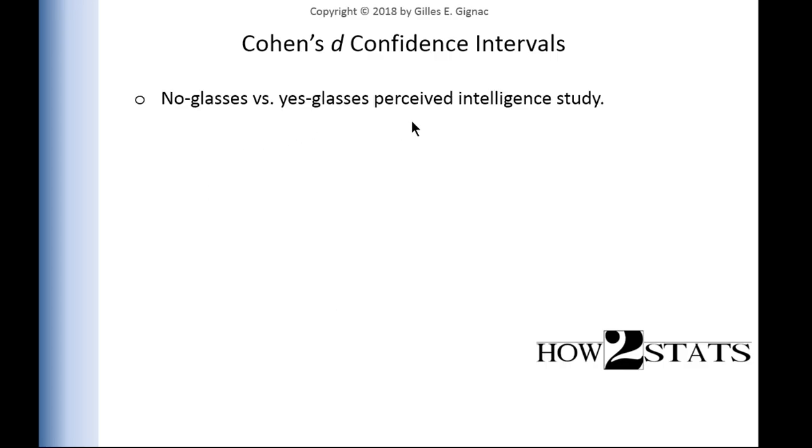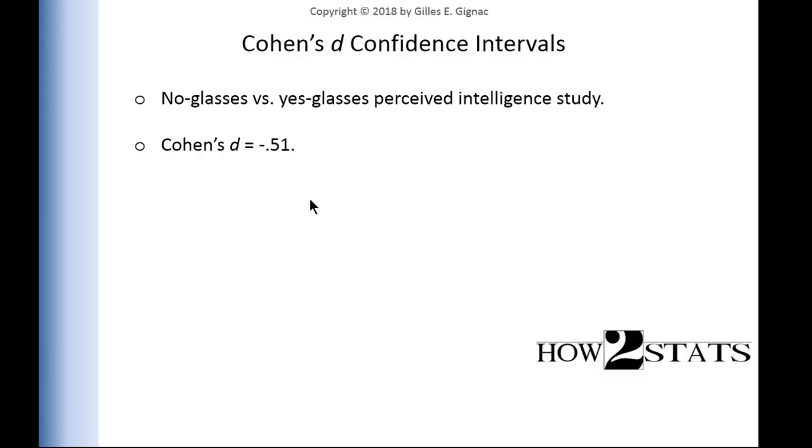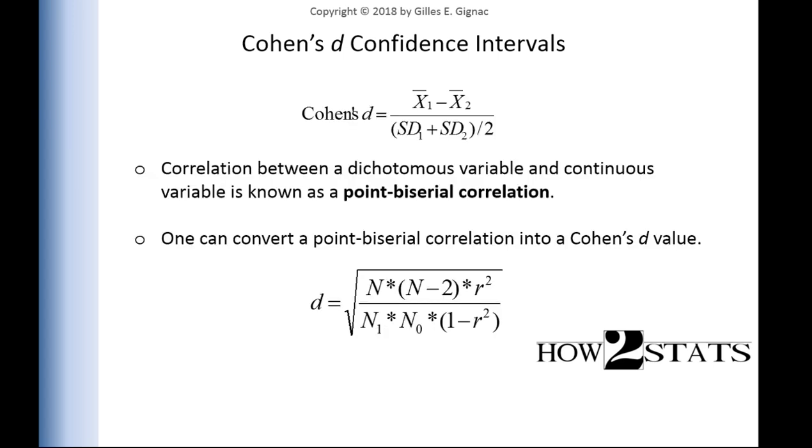So no glasses versus yes glasses, perceived intelligence study, the Cohen's d was negative 0.51. That's the point estimate. So 4.03 minus 4.43 divided by the average of these standard deviations gave me a Cohen's d of negative 0.51. Now how can I get the lower bound and the upper bound? Like I said in the chapter, it's complicated to get it directly from Cohen's d, but what you could do is just get the lower bound and upper bound point-biserial correlation, and then solve for the formula and get the upper and lower Cohen's d.